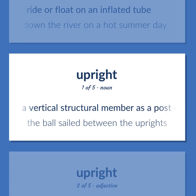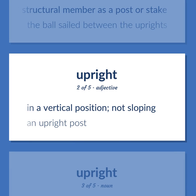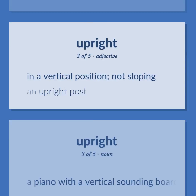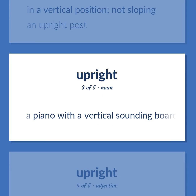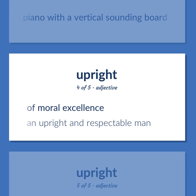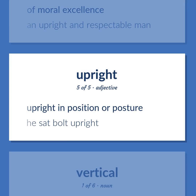Upright: A vertical structural member such as a post or stake. Example: The ball sailed between the uprights. In a vertical position, not sloping. An upright post. A piano with a vertical sounding board. Of moral excellence. Example: An upright and respectable man. Upright in position or posture. Example: He sat bolt upright.